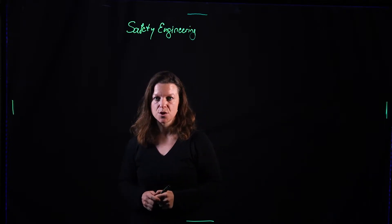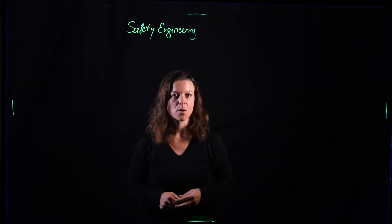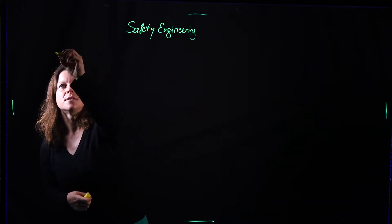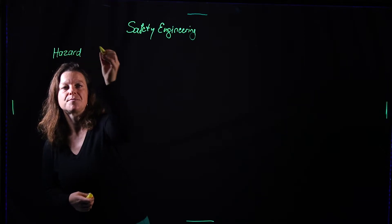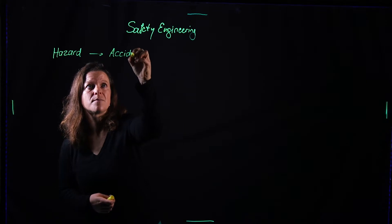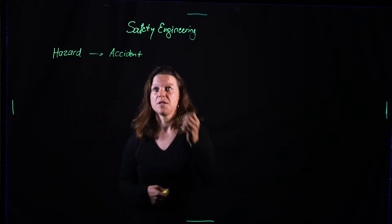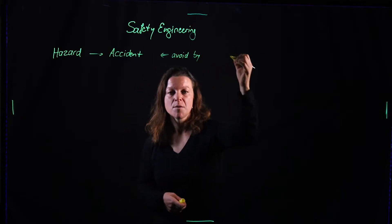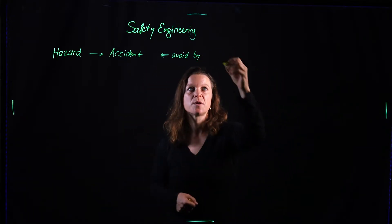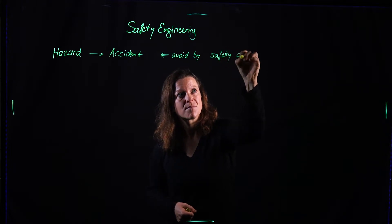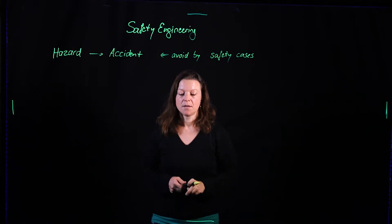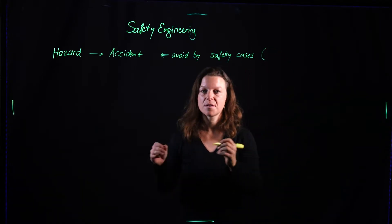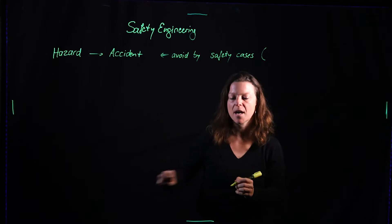The terminology for safety engineering is that we want to avoid accidents. Things go wrong when somebody or something gets harmed — that's what we call an accident. The cause of an accident is called a hazard. Hazard leads to accident. We avoid that through safety engineering, and more specifically by developing safety cases. A safety case is a constructed argument that shows nothing is going to go wrong with this system because we catch all the eventualities.